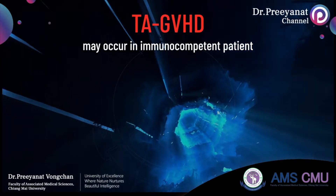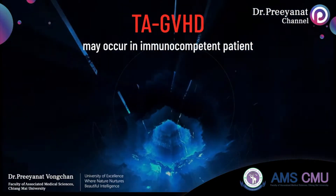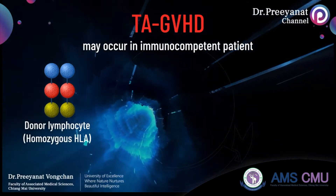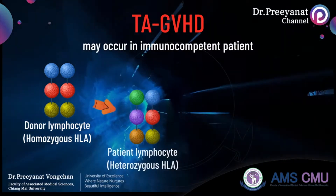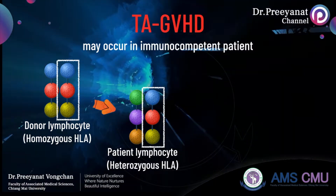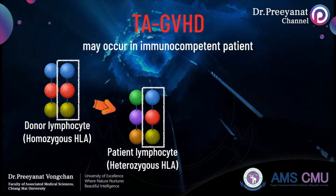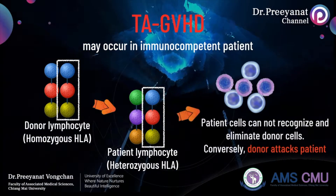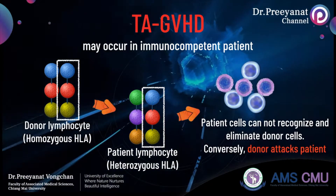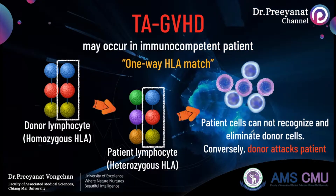Transfusion-associated graft-versus-host disease may occur in an immunocompetent patient if a blood component from a donor with a homozygous HLA haplotype is transfused to a patient having a heterozygous HLA with one haplotype match. In this event, immune cells of the patient cannot recognize and eliminate donor lymphocytes, and conversely, donor cells attack the patient. This phenomenon is called one-way HLA match.